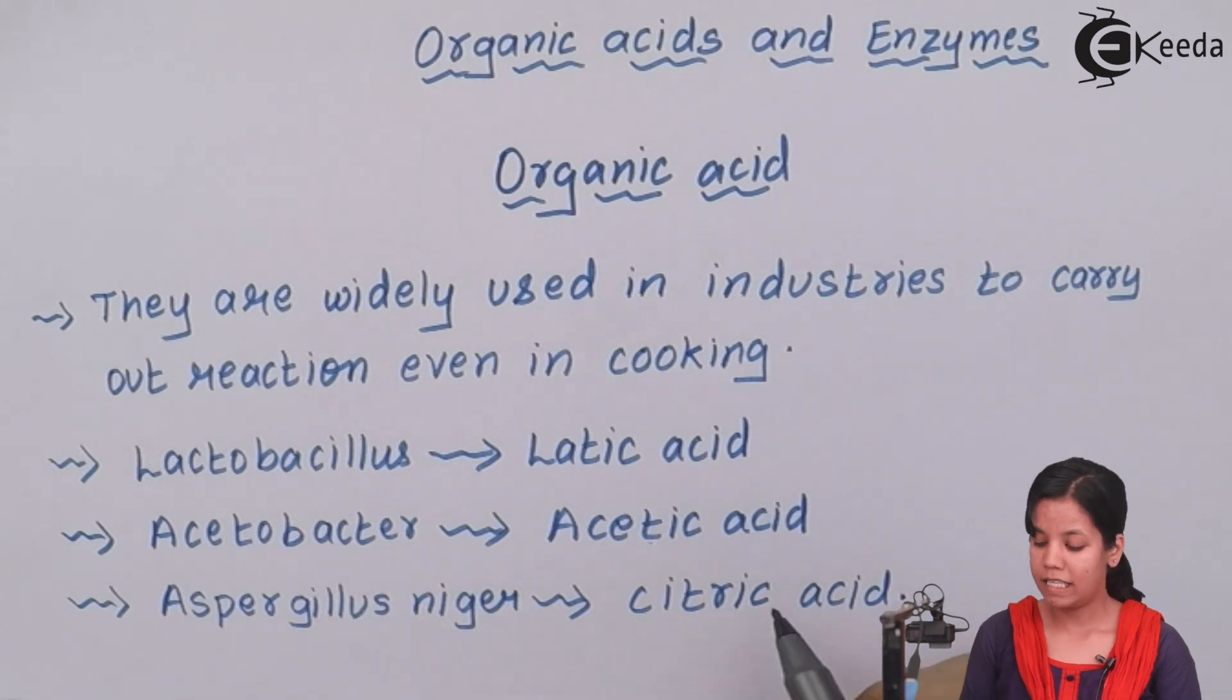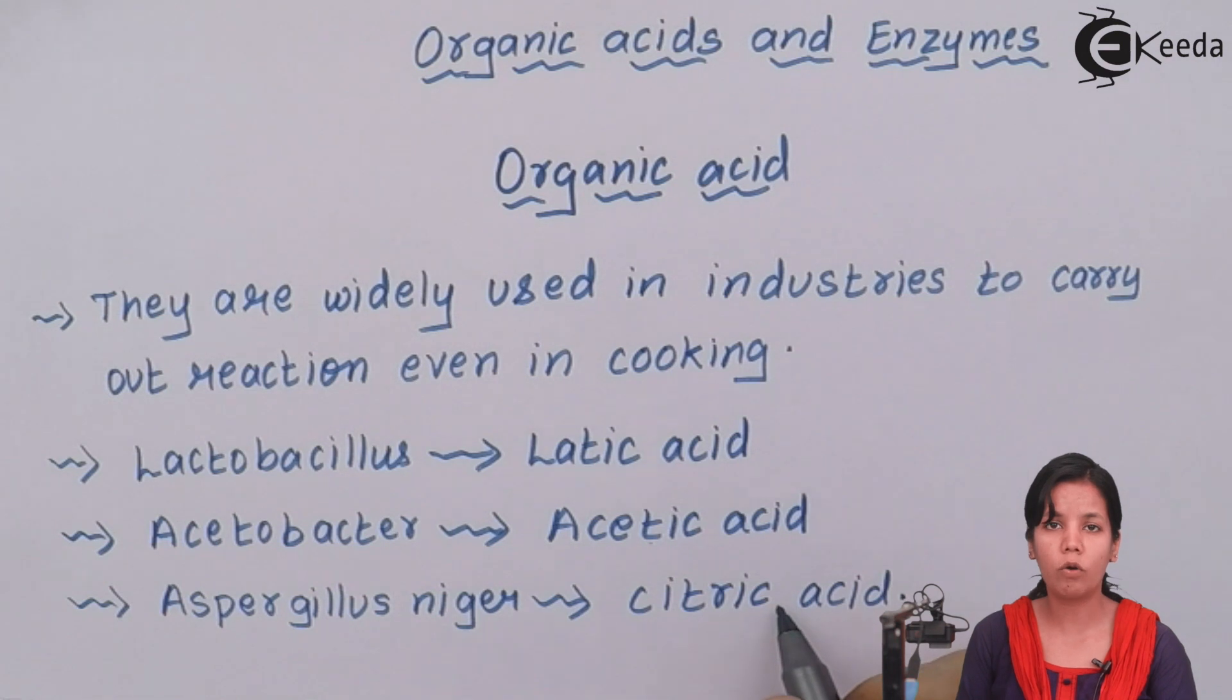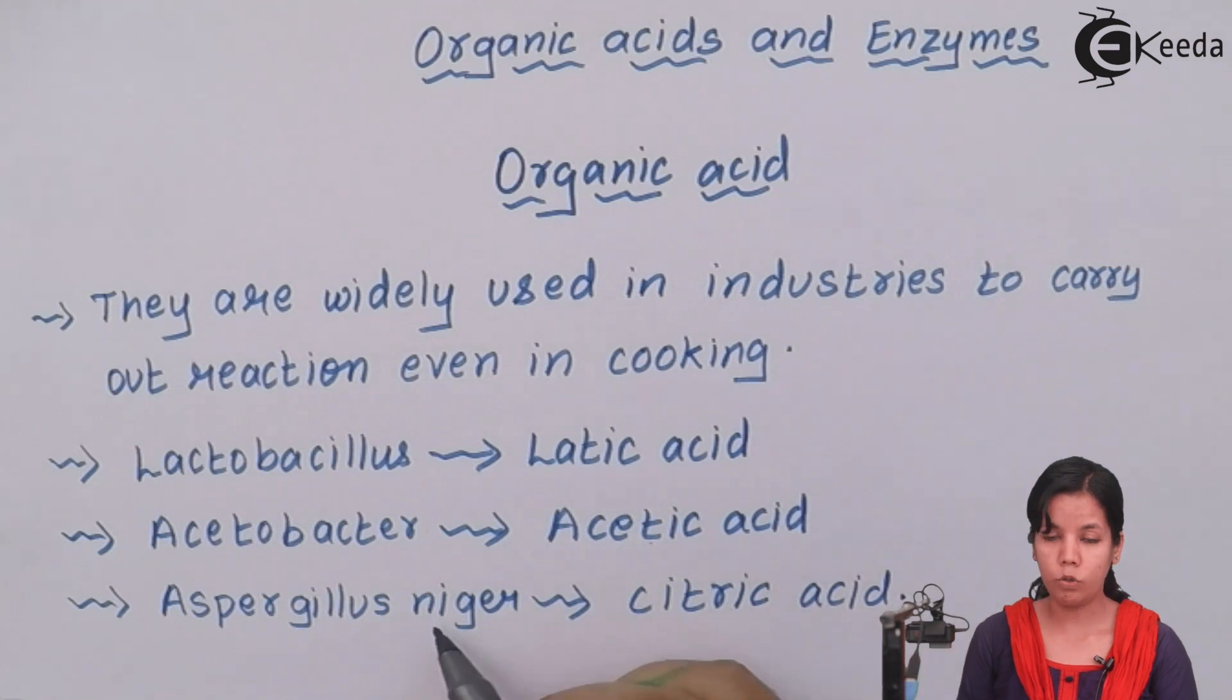Now the third one, citric acid which is used to bring that tangy or the sour flavor in various food products in cooking as well as in industries. It's produced with the help of aspergillus niger.